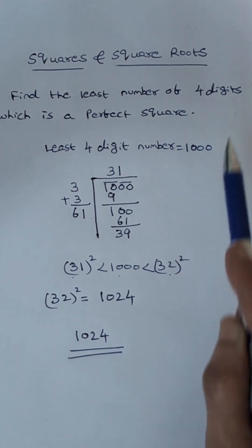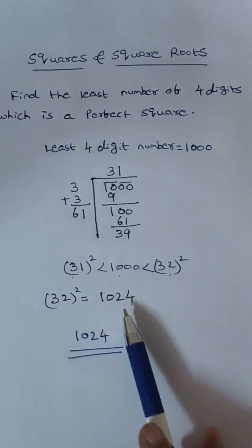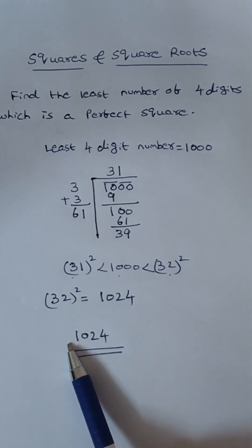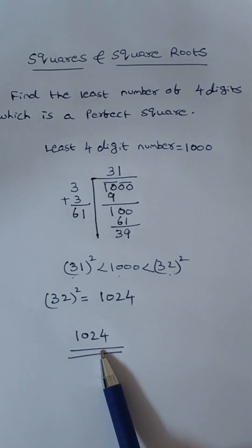We want a 4 digit perfect square number. So we have to find 32 square which is 1024. So this is the required least 4 digit perfect square number.